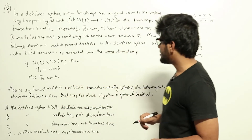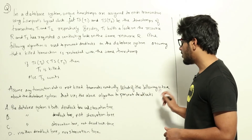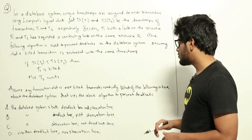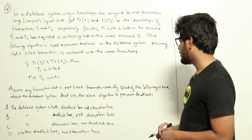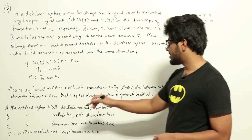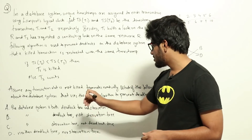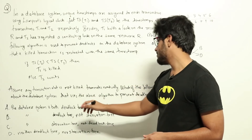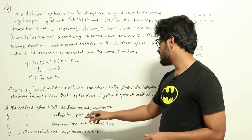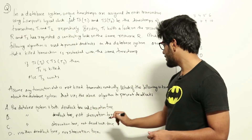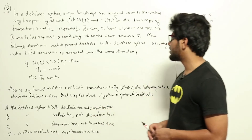Assume any transaction that is not killed terminates eventually. Which of the following is true about the database system that uses the above algorithm to prevent deadlocks? Option A: the system is both deadlock free and starvation free. Option B: the system is deadlock free but not starvation free. Option C: the system is starvation free but not deadlock free. Option D: neither deadlock free nor starvation free.